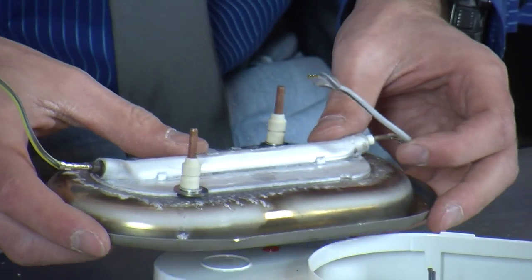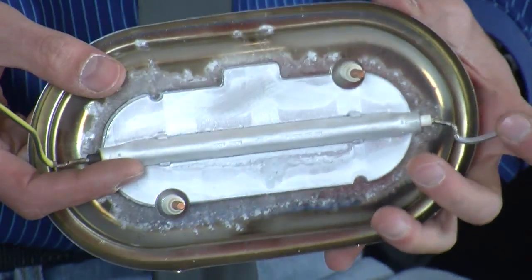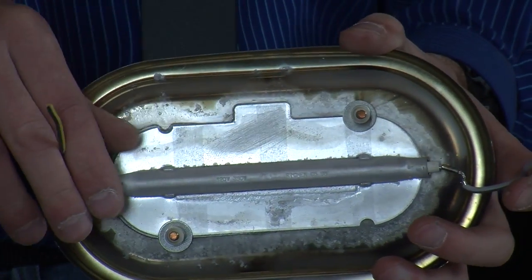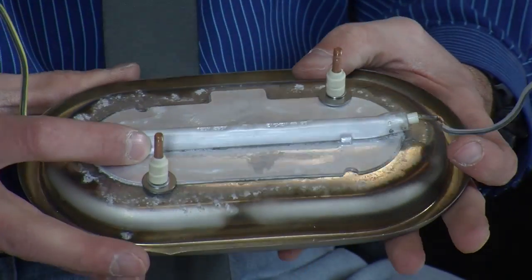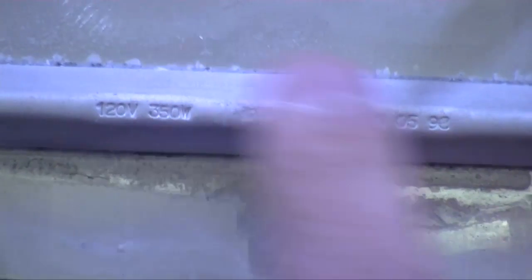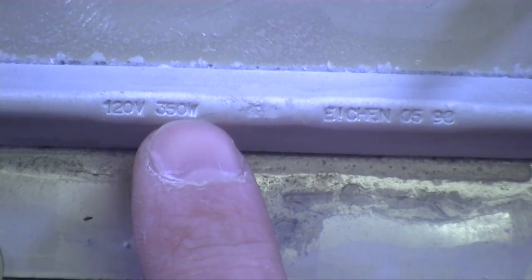And in here, you guys can see it better over there. In here, you can see this long piece with a wire in each end. That's just a simple resistive heating element. And they even went so far as to label it so that you can see 120 volts, 350 watts.